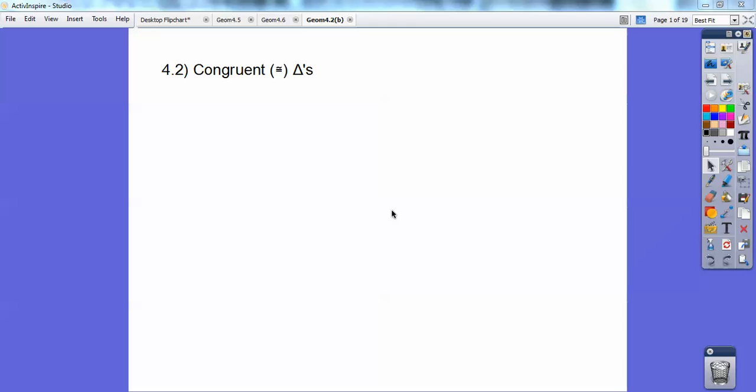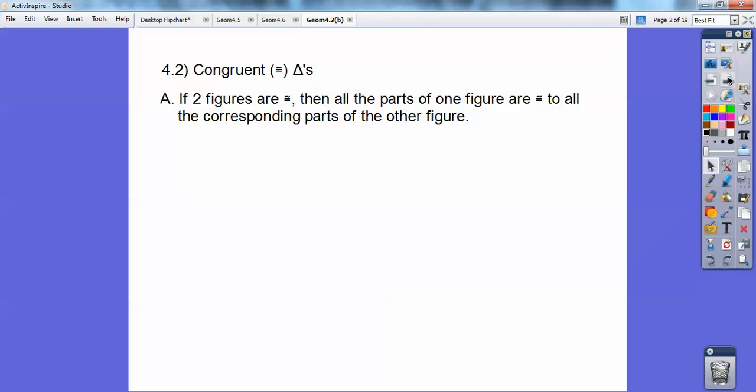Hey, everybody. This geometry lesson is on congruent triangles. So let's go ahead and begin. This is a quick one, I think. If two figures are congruent, then all their parts in one figure are congruent to all the corresponding parts of the other figure.